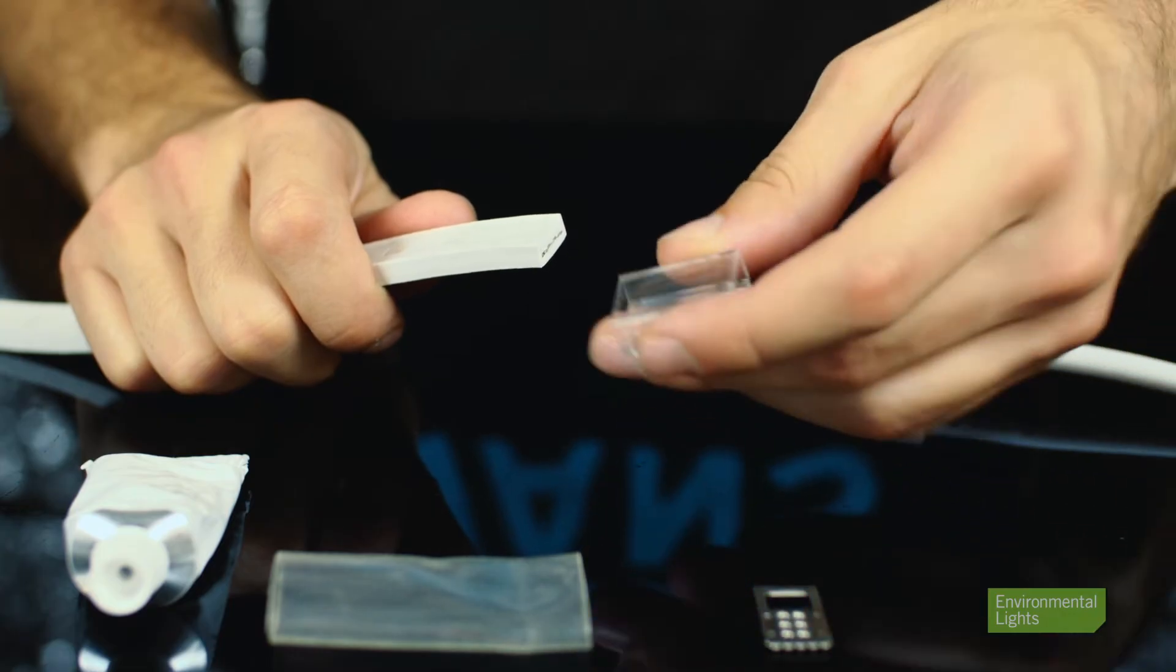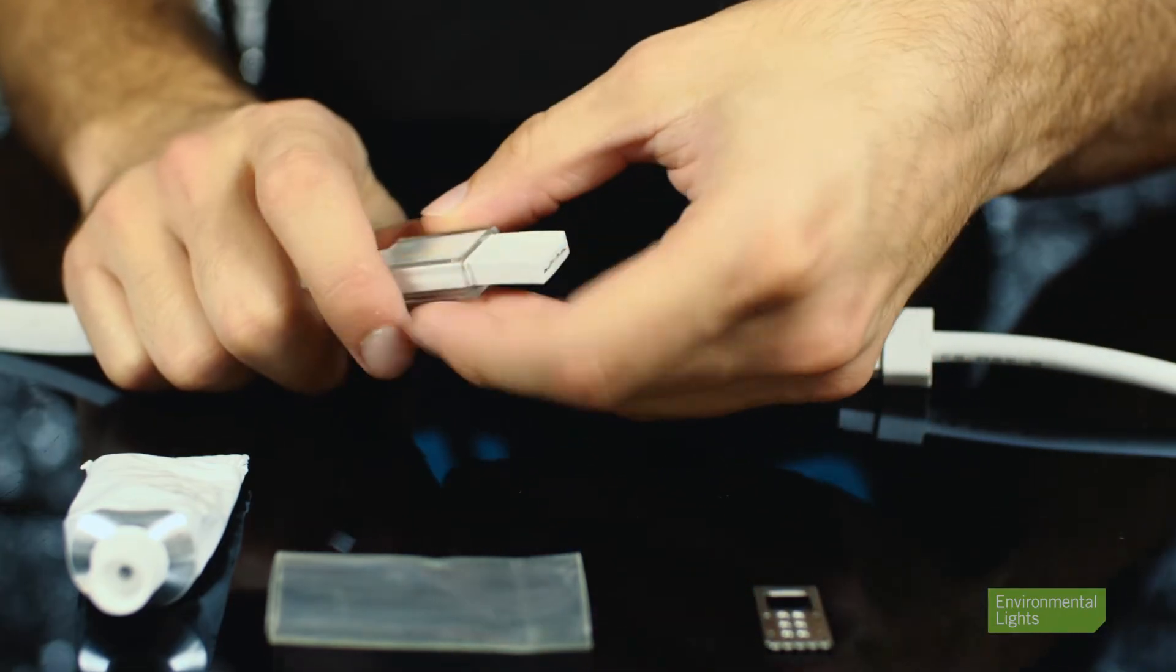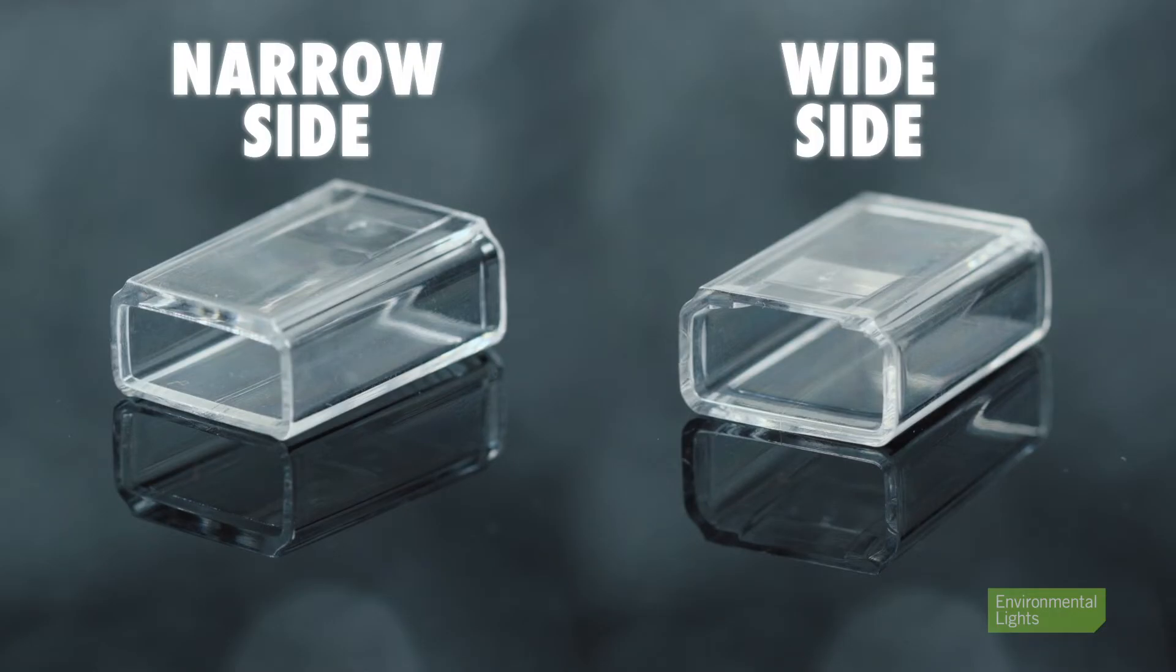First slide the cover over the end of the Super Flat Rope Light. Pay attention to the wide open side and make sure that side is the closest to the cut point.